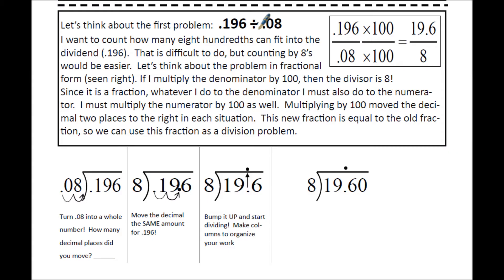Let's think about the first problem: 196 thousandths divided by 8 hundredths. I want to count how many 8 hundredths can fit into the dividend, and that's difficult to do, but counting by 8s would be easier. So let's think about the problem in fractional form. We have 196 thousandths as the first number, or the numerator, and 8 hundredths is the second number, or the denominator.